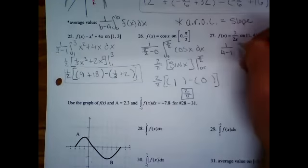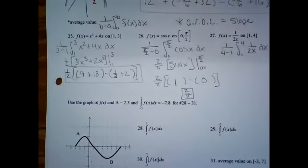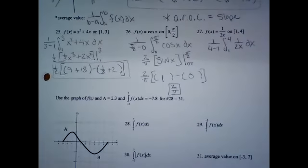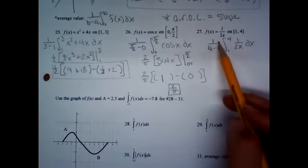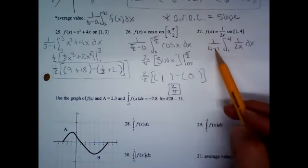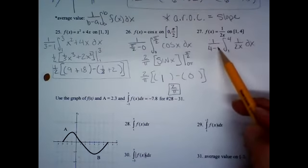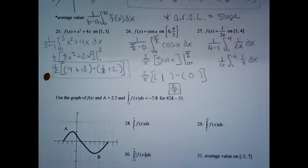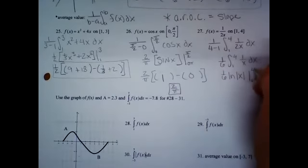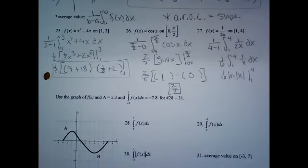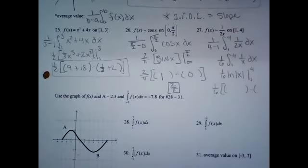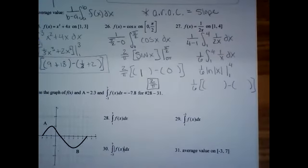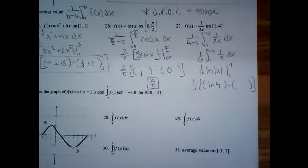Last one: one over (4 minus 1), integral from 1 to 4 of one over (2x) dx. I'm going to rewrite — bring out that one-half as well. One-third times one-half is one-sixth. Then I can write it as one over x. The antiderivative of one over x is ln. So it'll be one-sixth out front, with upper boundary minus lower boundary. Plugging in 4: ln of 4. Plugging in 1: ln of 1 is zero. So the answer is one-sixth times ln of 4.